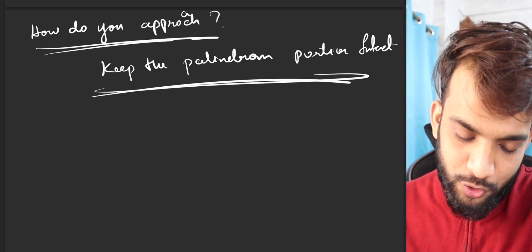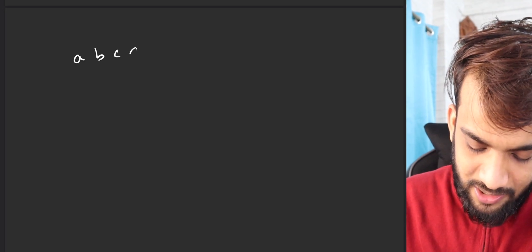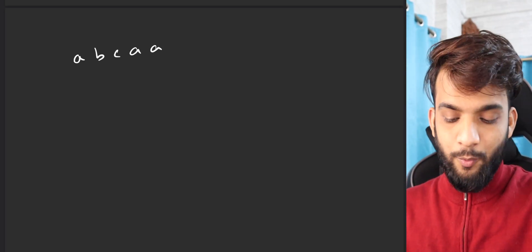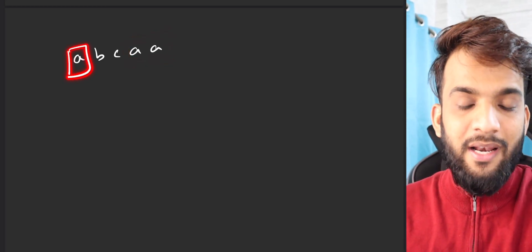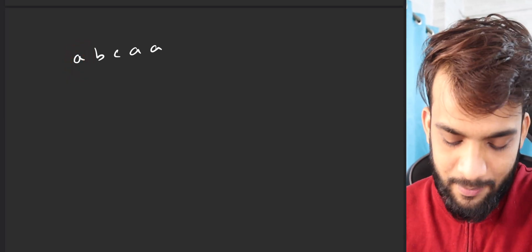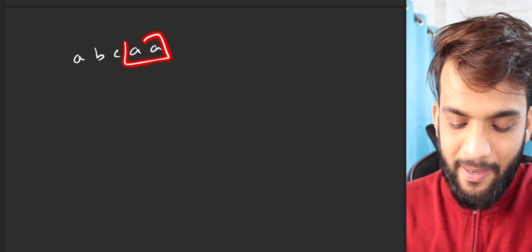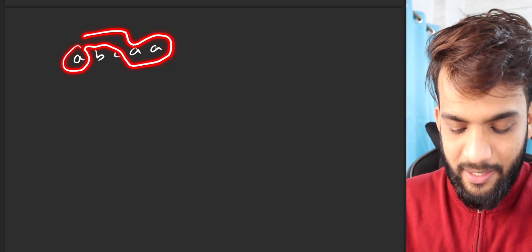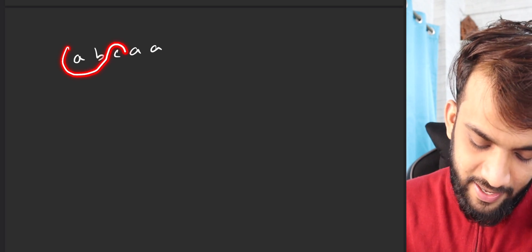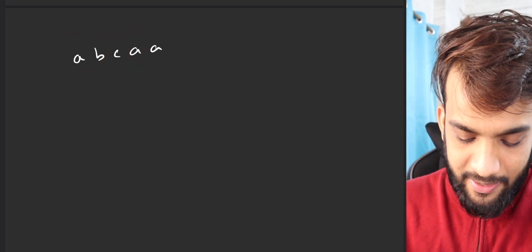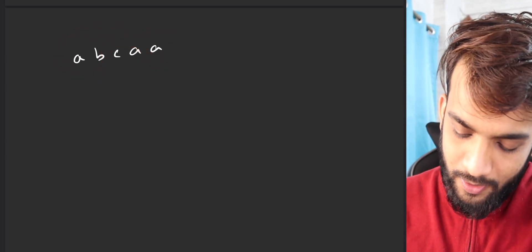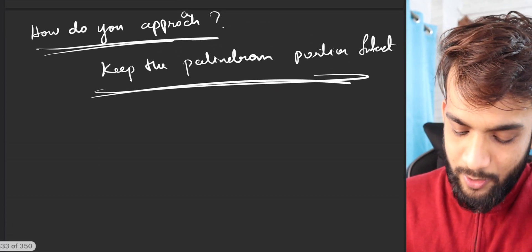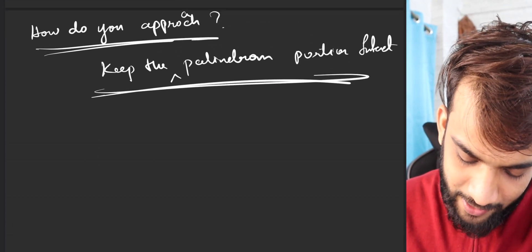When I say keep the palindromic portion intact, consider the string A, B, C, double A. Which is the palindromic portion? Double A is a palindrome, A is a palindrome, A-double-A is a palindrome, A-B-A is a palindrome — there can be many palindromic subsequences. If I'm looking to minimize operations, I will try to keep the longest palindromic portion intact.